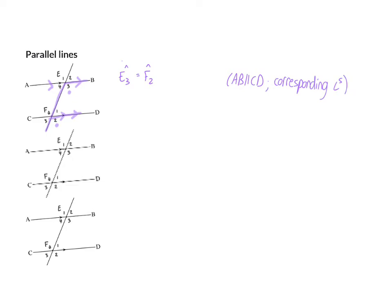My second option is if I see an N or a Z. If I have that, and once again with the two legs of that N being parallel, I can say that the two angles on the inside of those legs or arms are equal. So angle E4 is equal to angle F1, and once again my reason: I have to mention my parallel lines, and then alternating or alternate angles.